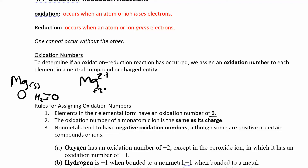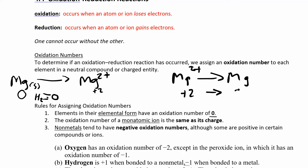If I had magnesium solid on the left as a reactant with an oxidation number of zero, and then on the product side I have magnesium 2+, the oxidation number is increasing — that is an oxidation. If you lose electrons, you lose something negative and become more positive. If it was reversed — going from magnesium 2+ down to magnesium solid — you went from plus two to zero, the number is decreasing. That's a reduction. So if the number increases, it's oxidation; if the number decreases, it's reduction.